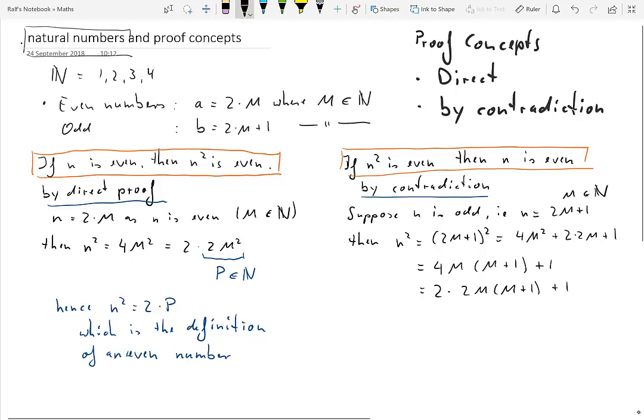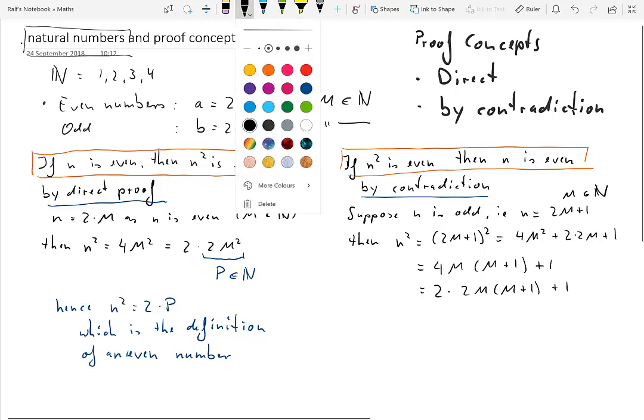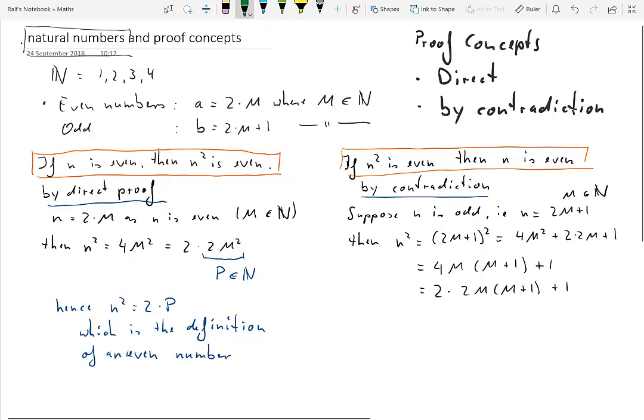Before we make that useful, we will change that to instead of 4 times m to 2 times 2m times m. And now as before we are looking at this term and call it p again.